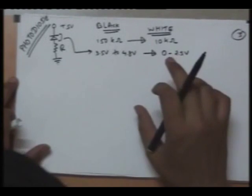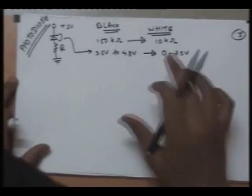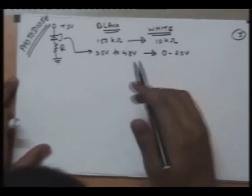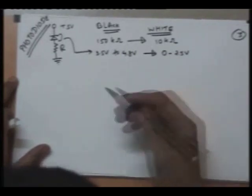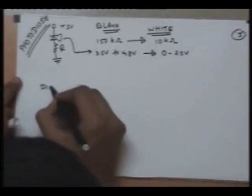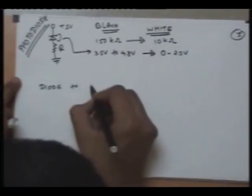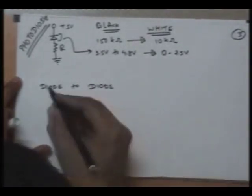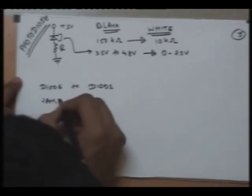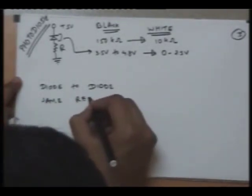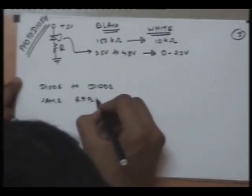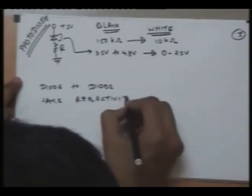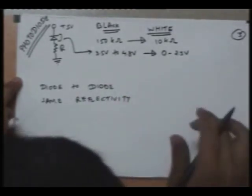But you must note that the particular behavior of any photodiode or IR LED varies from diode to diode. And also, as no two surfaces have the same reflectivity, we need to calibrate our sensors.